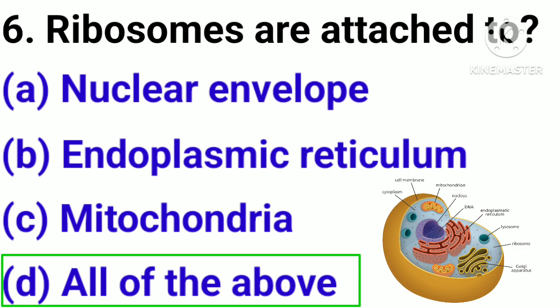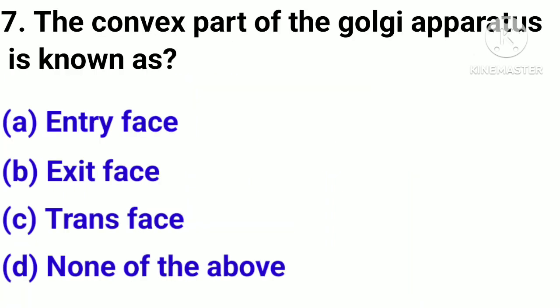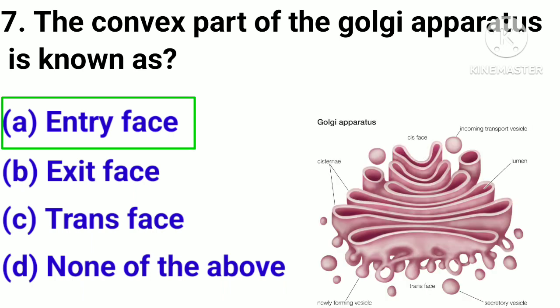Correct answer: option D. Question number 7. The convex part of the Golgi apparatus is known as: option A, Entry face; option B, Exit face; option C, Trans face; option D, None of the above.